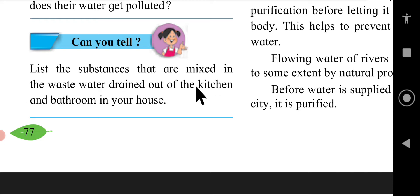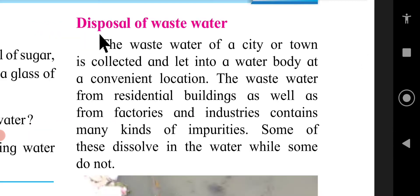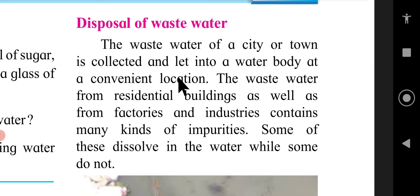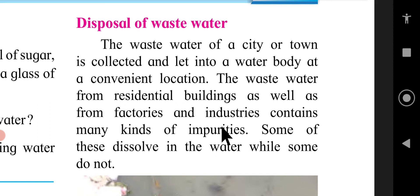List the substances that are mixed in the wastewater drained out of the kitchen and bathroom in your house. The wastewater from residential buildings as well as from factories and industries contains many kinds of impurities.